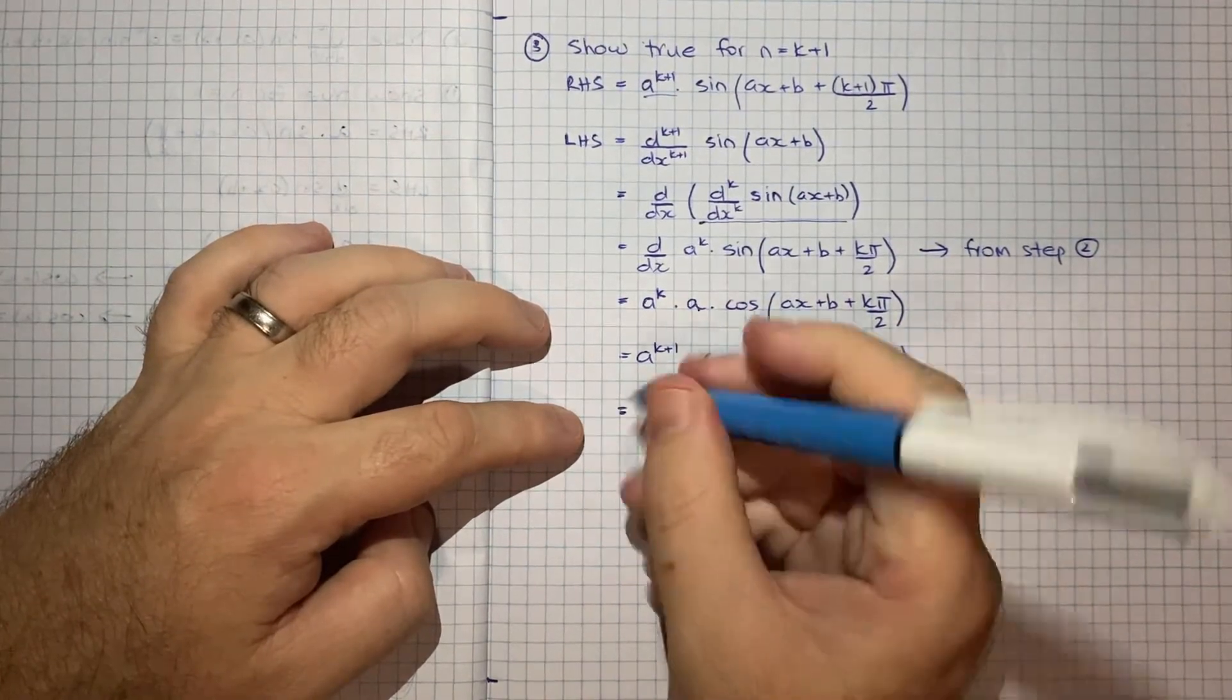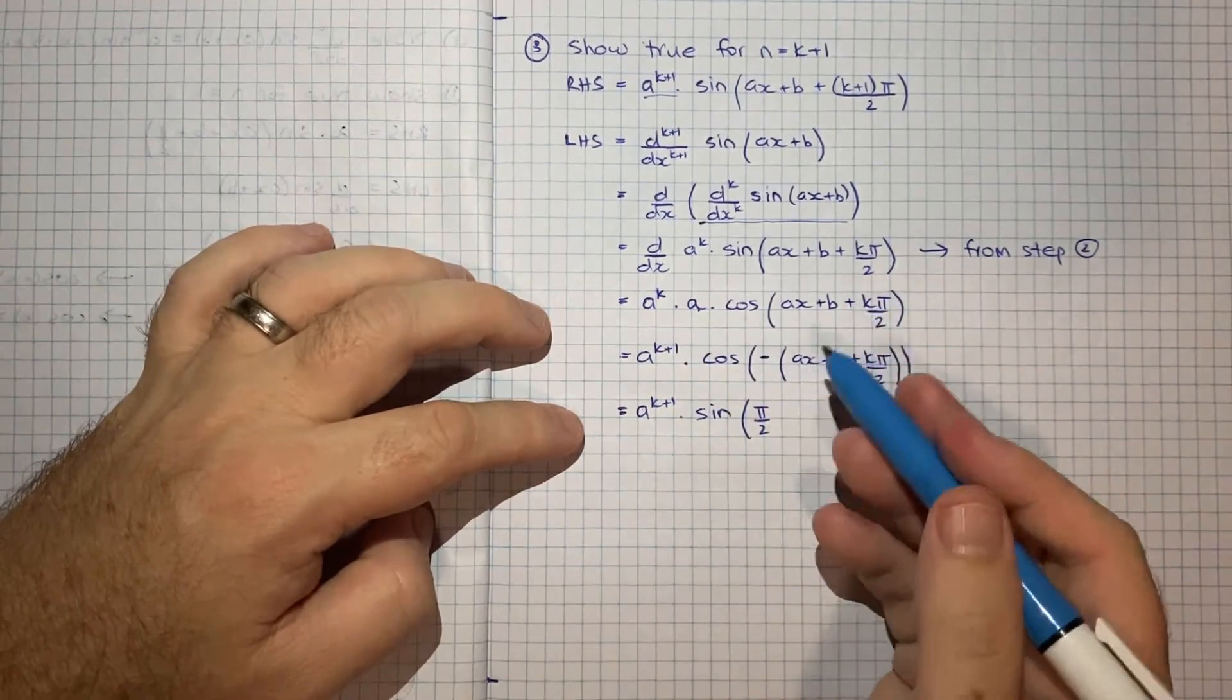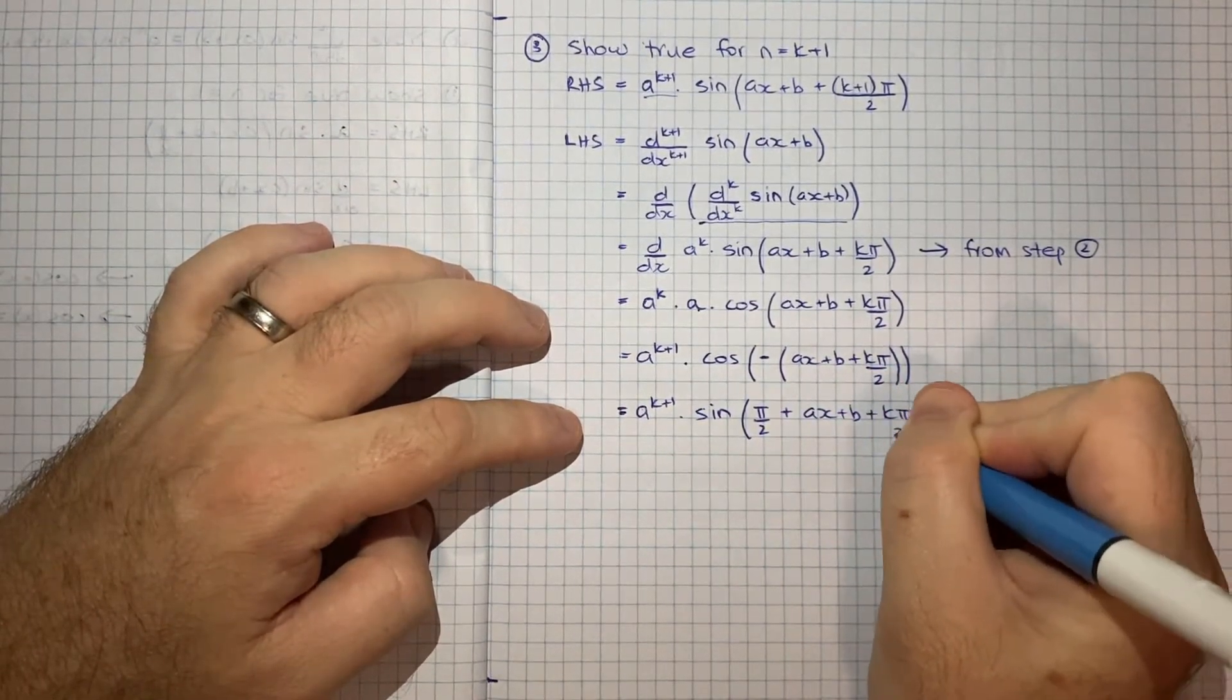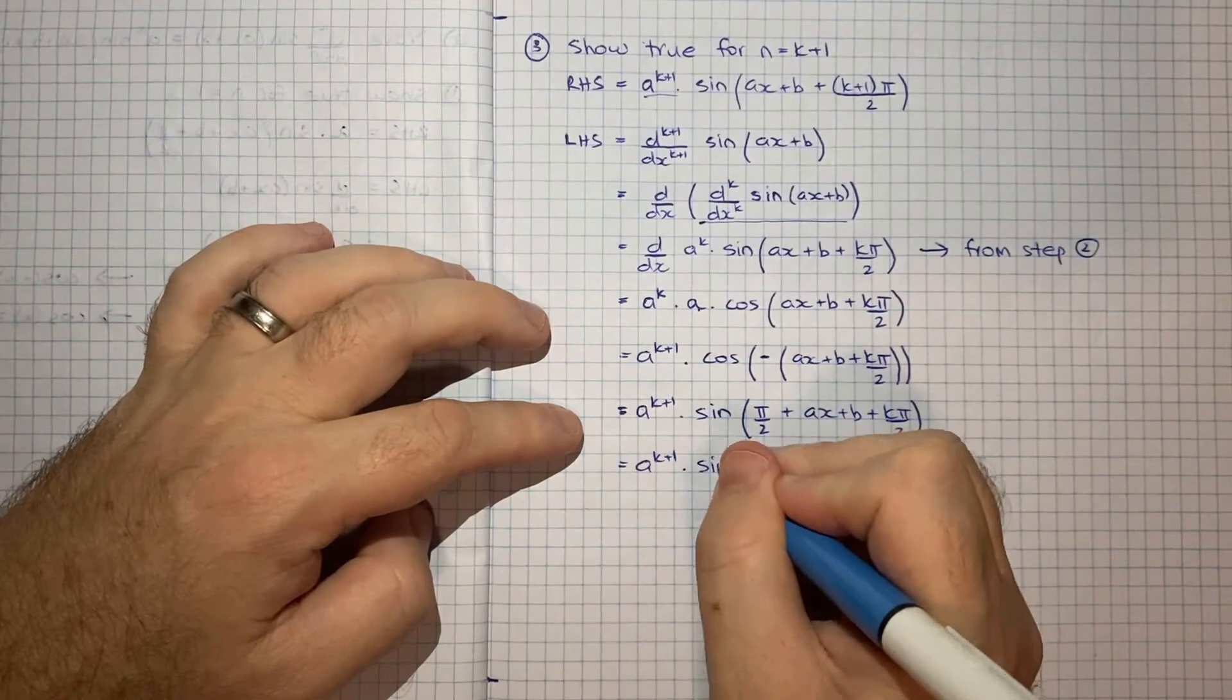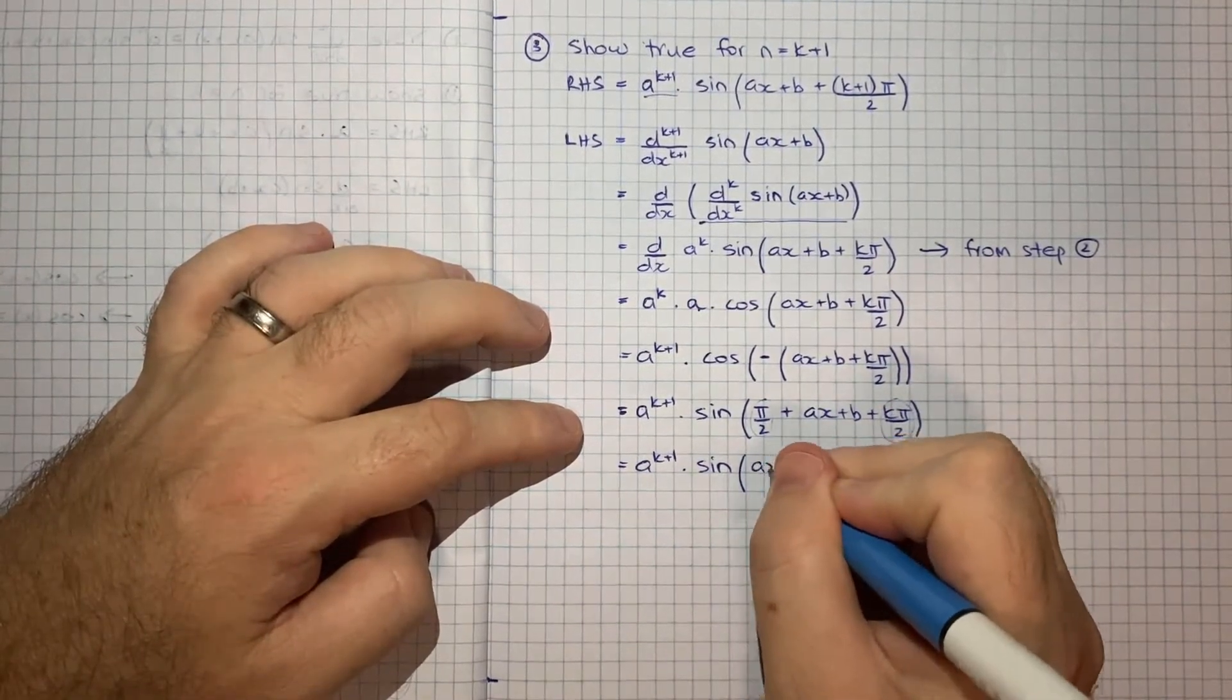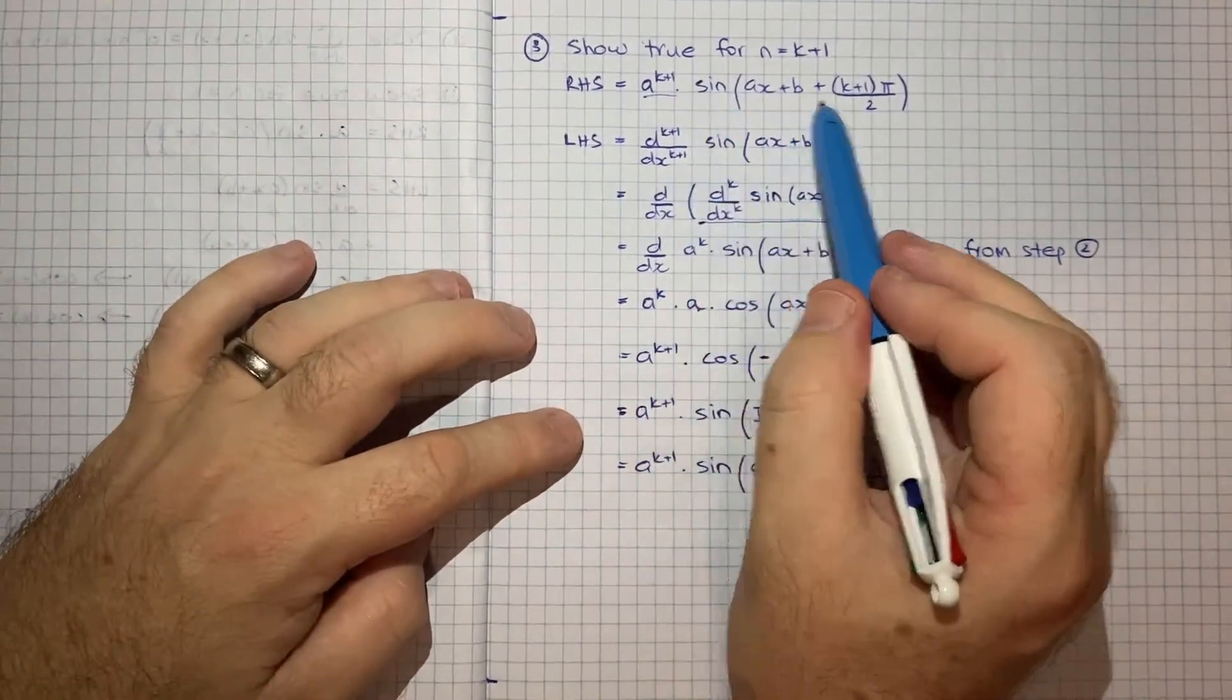And then we can use the same technique again of linking cosine with sine π/2. So cos of x is sine π/2 minus x. So π/2 minus minus. So plus ax+b+kπ/2. And then this becomes a^(k+1) times sine. And I'll combine the π/2 with the kπ/2. Which is effectively (k+1)π/2. So we'll get ax+b+(k+1)π/2. And that is exactly our right hand side.